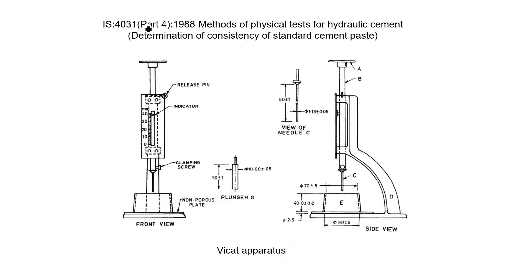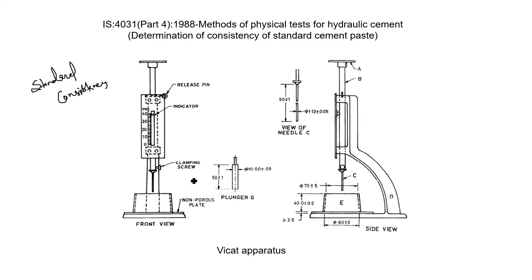IS 4031 Part 4 gives the procedure for determining the quantity of water required to produce a cement paste of standard consistency. The standard consistency of a cement paste is defined as that consistency which will permit the Vicat plunger to penetrate to 5 to 7 mm from the bottom of the Vicat mold. By using this Vicat apparatus we can find the consistency of the standard cement paste, and also find the setting time of the cement.